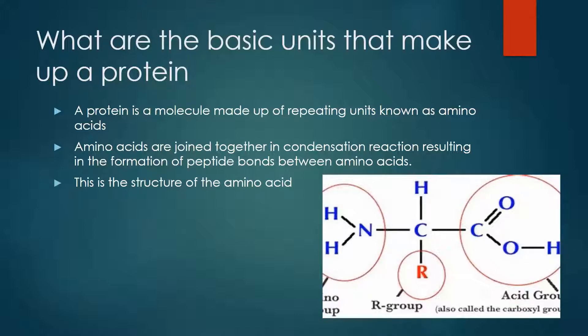Here the diagram will show you the structure of the protein. The NH2 group is known as the amino group. The COOH group is known as the carboxyl group, the H group is the hydrogen group, and the R group is known as the variable group. And this is common to all proteins.